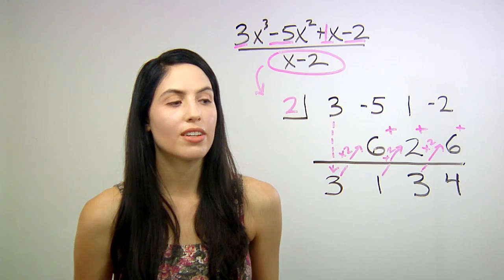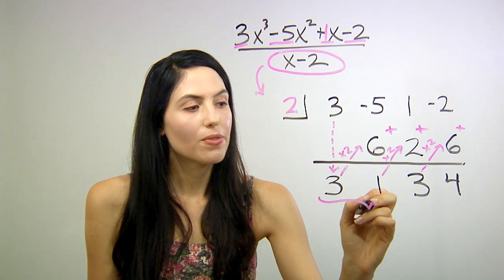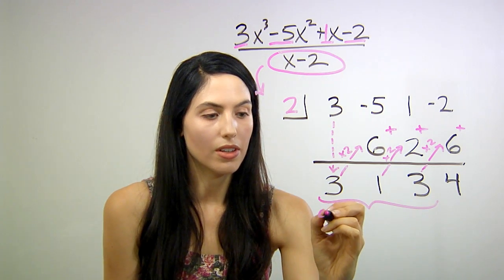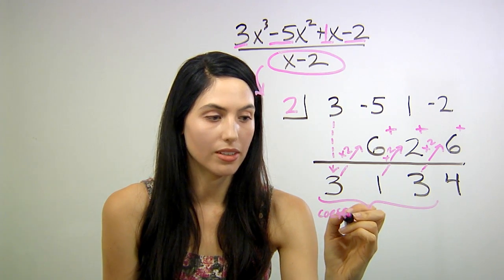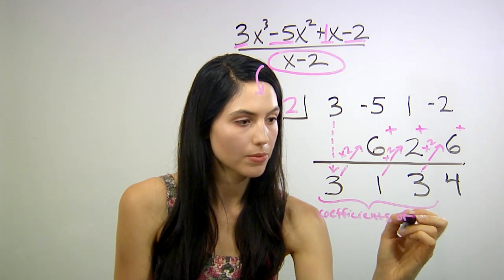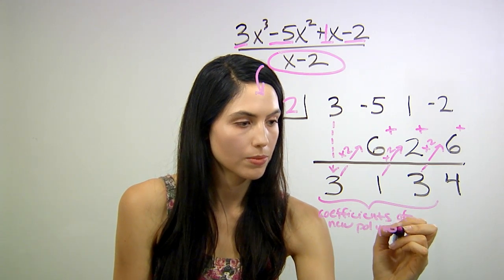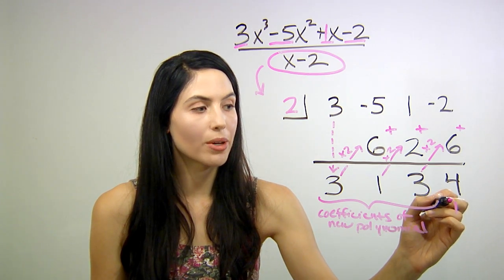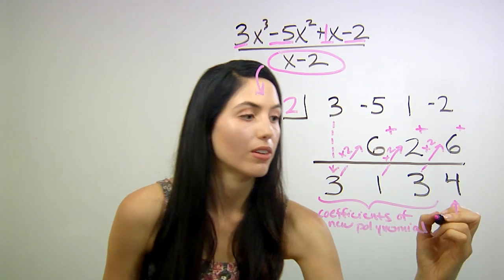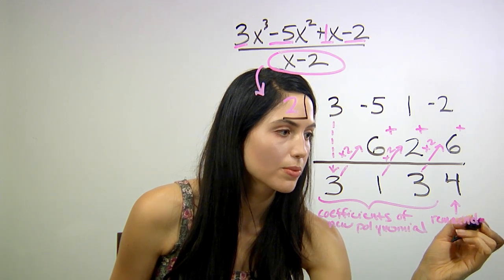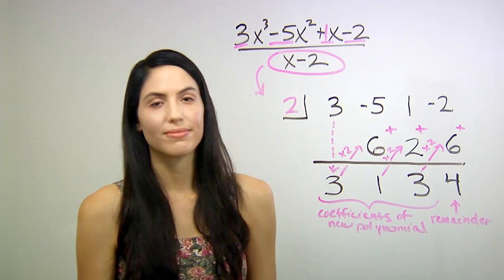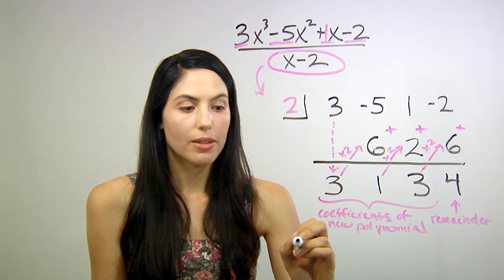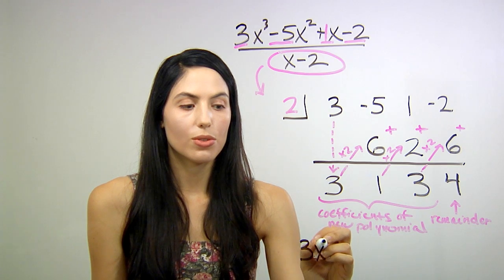Okay, you're done with the division. And these first three numbers are your coefficients of your new polynomial. And this last, final number is your remainder. Here's how we write your final answer. You're going to write 3, and then x squared.